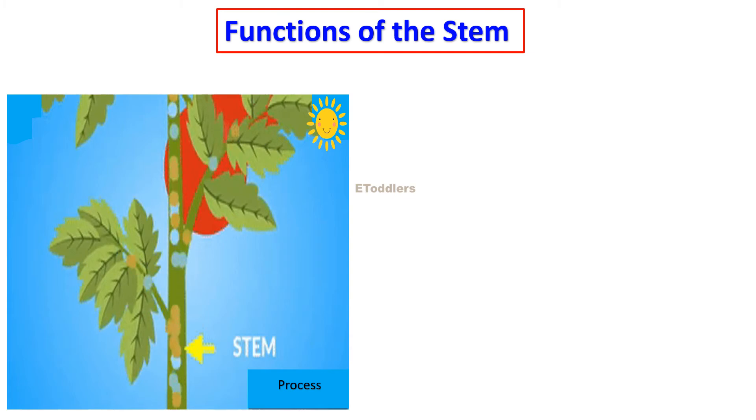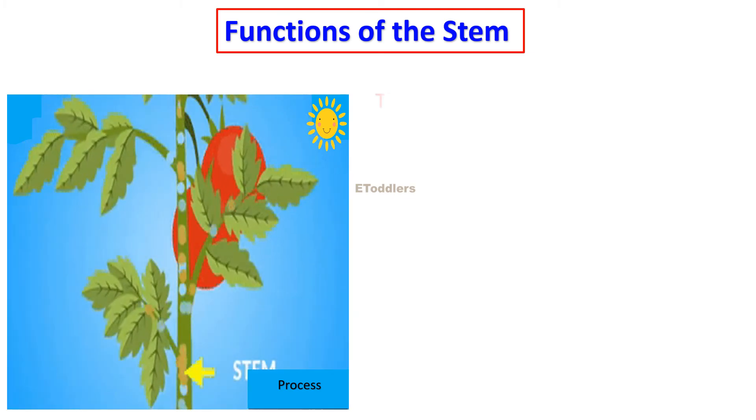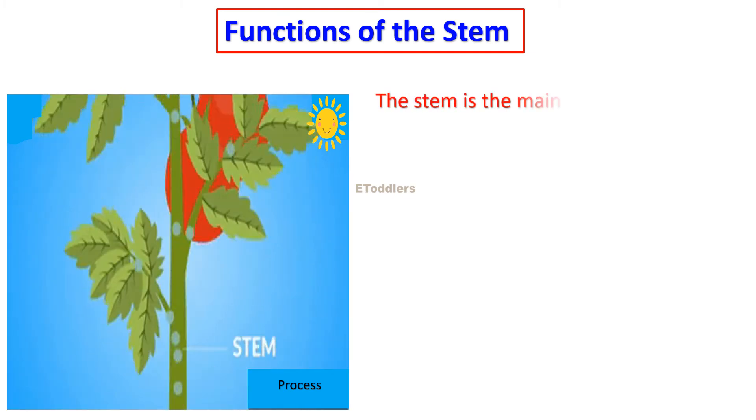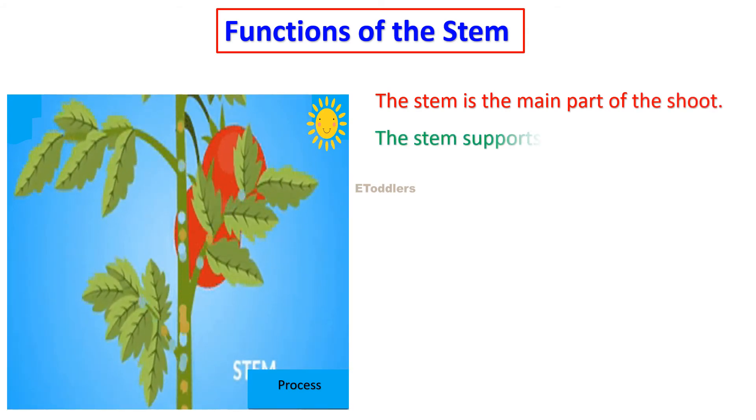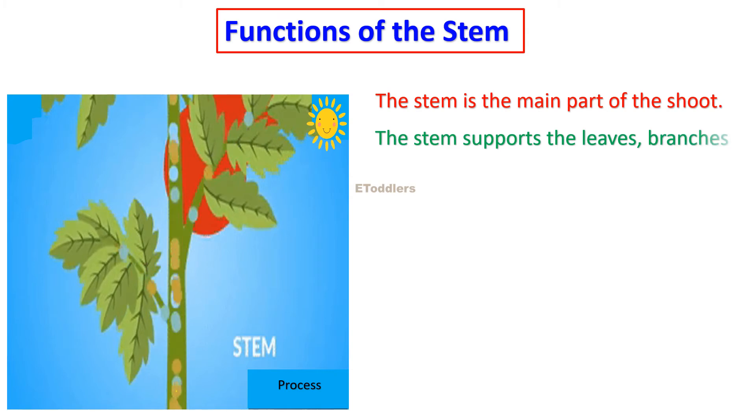Functions of the stem. The stem is the main part of the shoot. The stem supports the leaves, branches, buds, flowers and fruits.